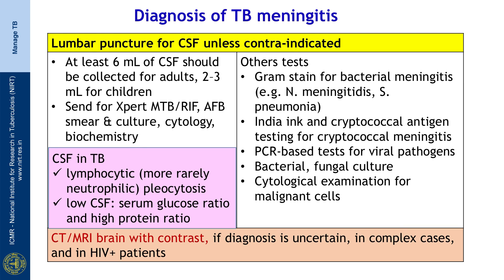Depending on the clinical condition, other tests should be done — like Gram stain for bacterial meningitis such as Neisseria meningitidis or Streptococcus pneumoniae, Indian ink and cryptococcal antigen testing for cryptococcal meningitis in HIV patients, PCR-based tests for viral pathogens, and cytological examination for malignant cells if malignancy is in mind. In complex cases and HIV-positive patients, CT or MRI brain with contrast can also be helpful.